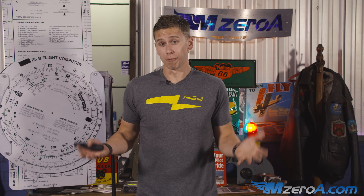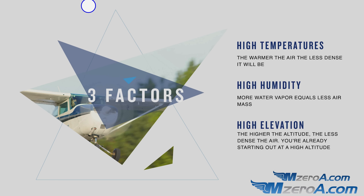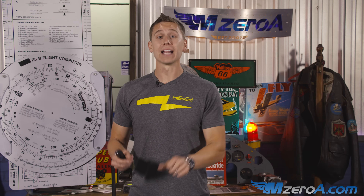It's where the airplane feels like it's at. How does your aircraft perform at higher altitudes? It doesn't perform better. You may burn less fuel, but as far as climb-out performance, we get a decrease in performance as we increase in altitude. Density altitude is where the airplane feels like it's at. High density altitude means poor performance. Now there are three factors that affect density altitude. The first is high temperatures — the warmer the air, the less dense it will be. The air is less dense, but that adds to an increase in density altitude.